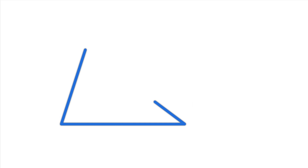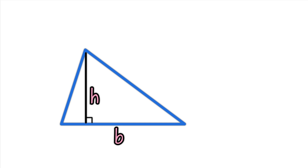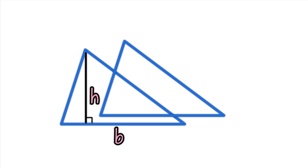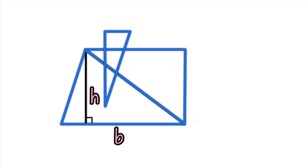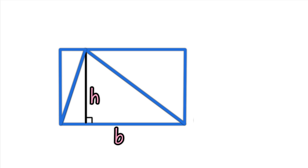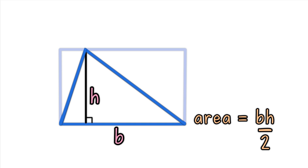Why is the area half of bh? Imagine you doubled the triangle. Flip it around one of the upper edges to make a square-like shape. By slicing the new triangle and moving the sliced part to the other side, you get a simple rectangle, whose area is bh. bh is for both triangles, so just one is half of bh.